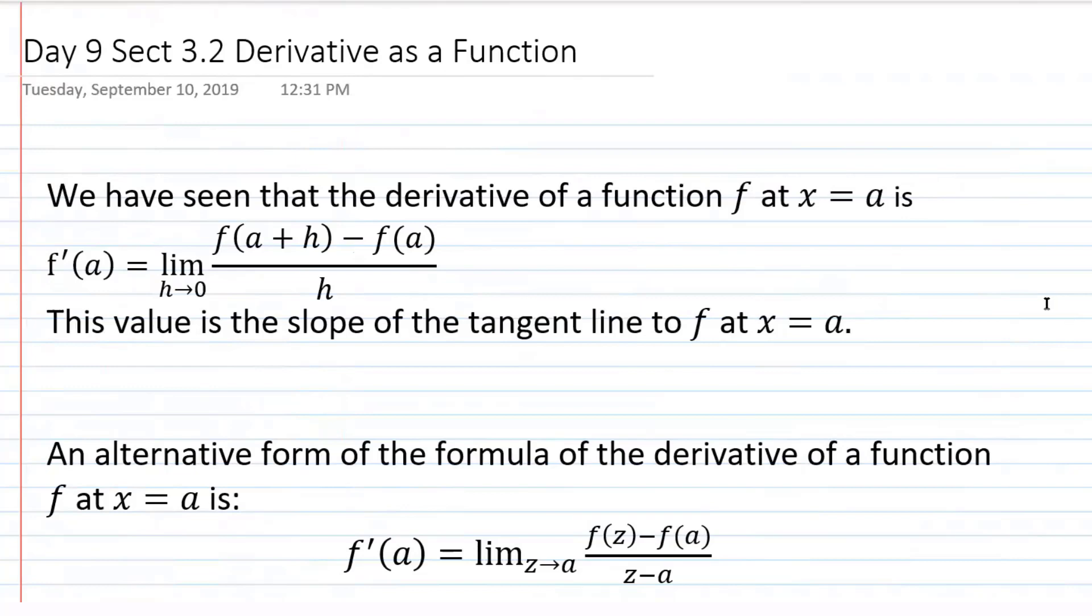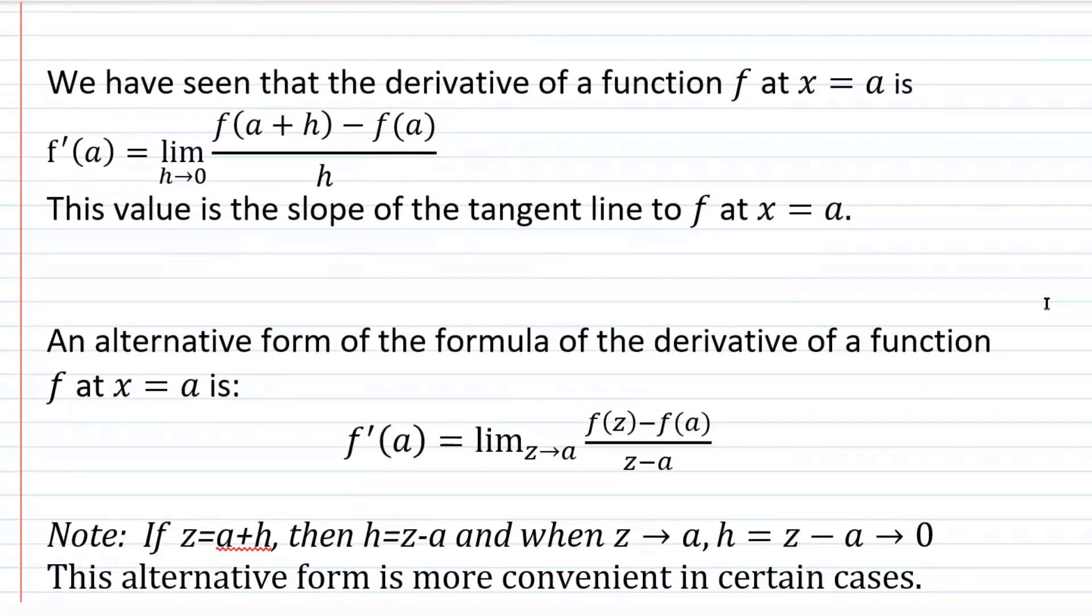First thing I want to talk about is that we can write the derivative formula in more than one way. Remember, the derivative formula is the limit of the difference quotient, but the difference quotient is just a formula for slope. This is the version we looked at yesterday. The only difference is I had written x sub zero instead of a. It doesn't matter. These are the same thing. We're just using a different variable for the point a.